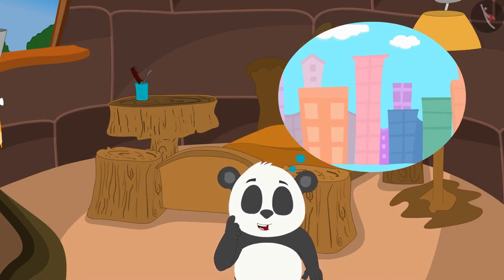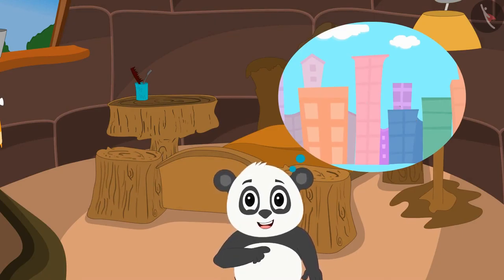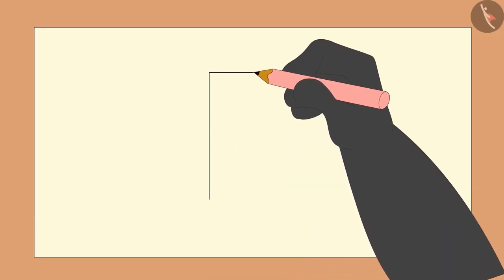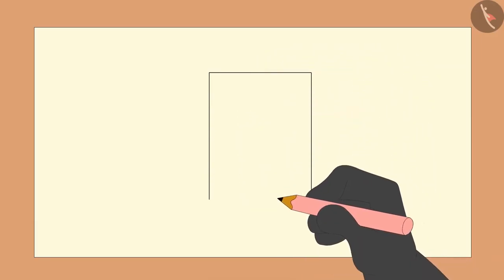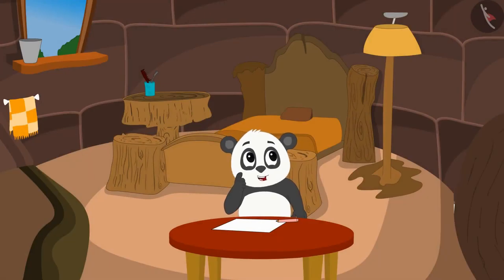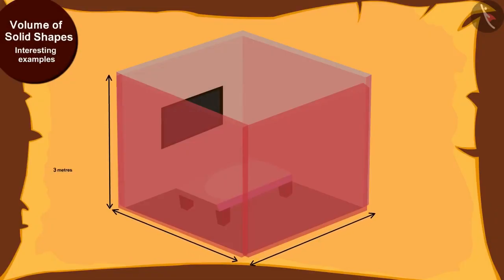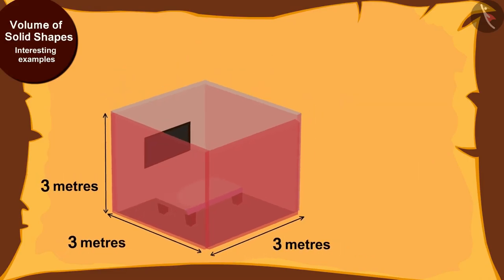Why don't I build such a tall building in Champapur? Golu thought about it and started designing the building. To make each house unique, I will make it cube-shaped. The sides of each house will be three meters long, he thought.